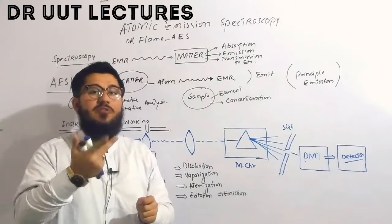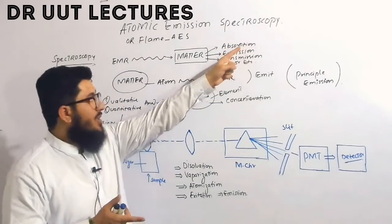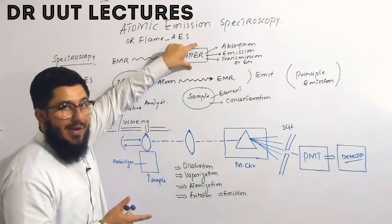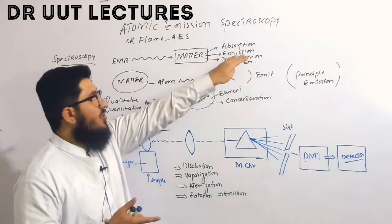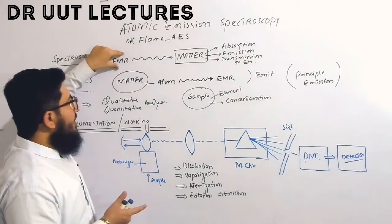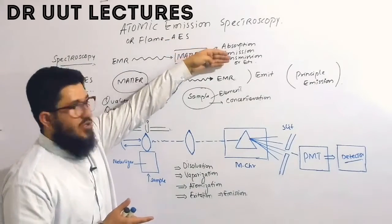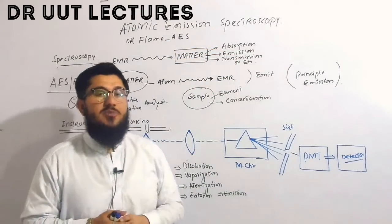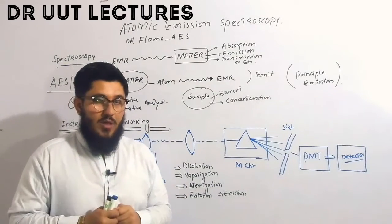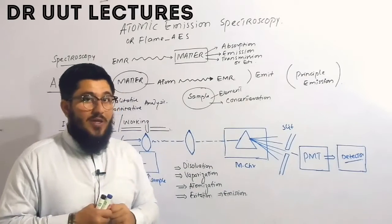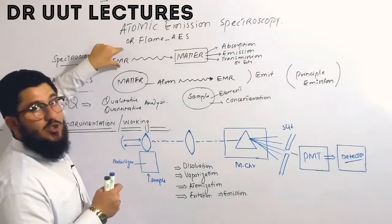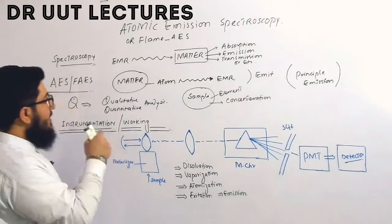This interaction may be of different types. It may be in the sense of absorption, meaning that electromagnetic radiation may be absorbed by matter. This interaction may also be in the sense of emission, meaning that electromagnetic radiation may be emitted by matter, and transmission, among other interactions. In this lecture we will talk about atomic emission spectroscopy, which is a kind of interaction in which matter emits electromagnetic radiation.